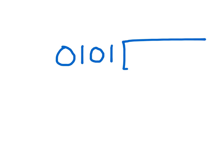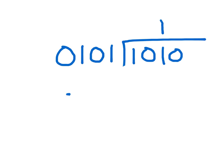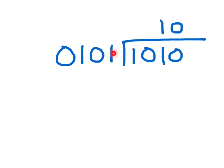Now let's consider dividing 5 into 10. If the answer was 1, the number here would be 5 — not the case. If the answer was 2, then the number would be 01010 — this number with a 0 at the end. They are exactly the same, so we can stop right there. We know that 5 into 10 is 2 times.